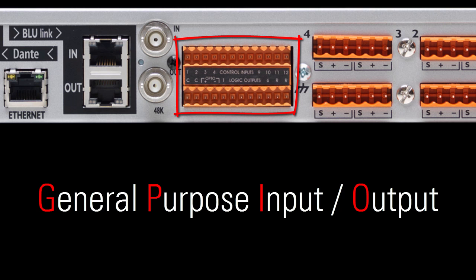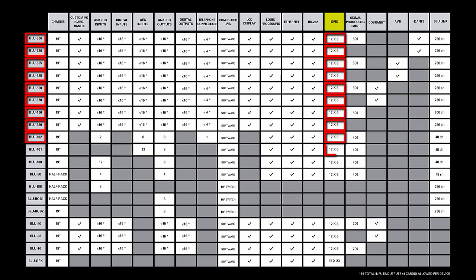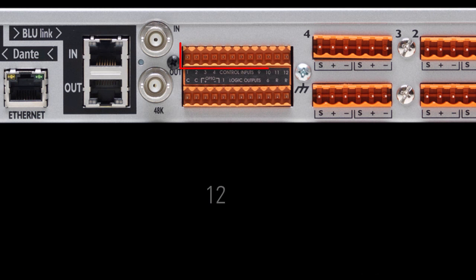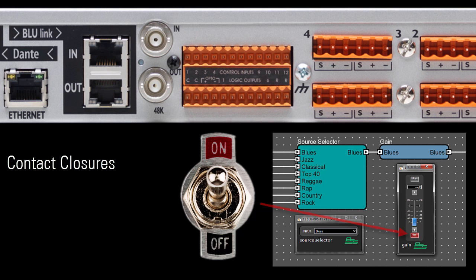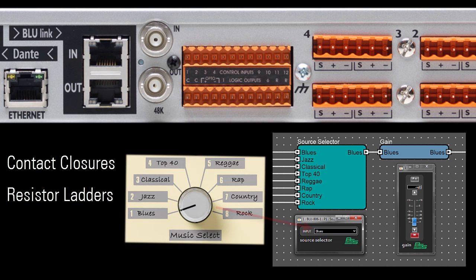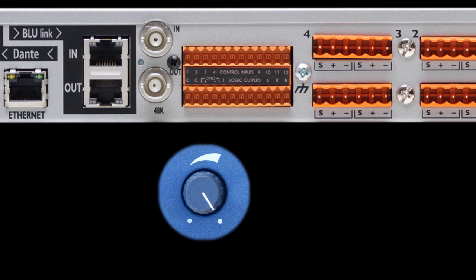These general purpose input-output ports are found on every device with the GPIO feature. There are 12 GPI and 6 GPO. The 12 GPI ports allow the SoundWeb London to be controlled using any of three simple electrical components: contact closures for control of binary parameters such as mutes, resistor ladders for control of multi-state parameters such as source selectors, and analog potentiometers for control of continuous parameters such as volumes. The electrical component connects between either of the two common ports and any one of the 12 GPI ports.